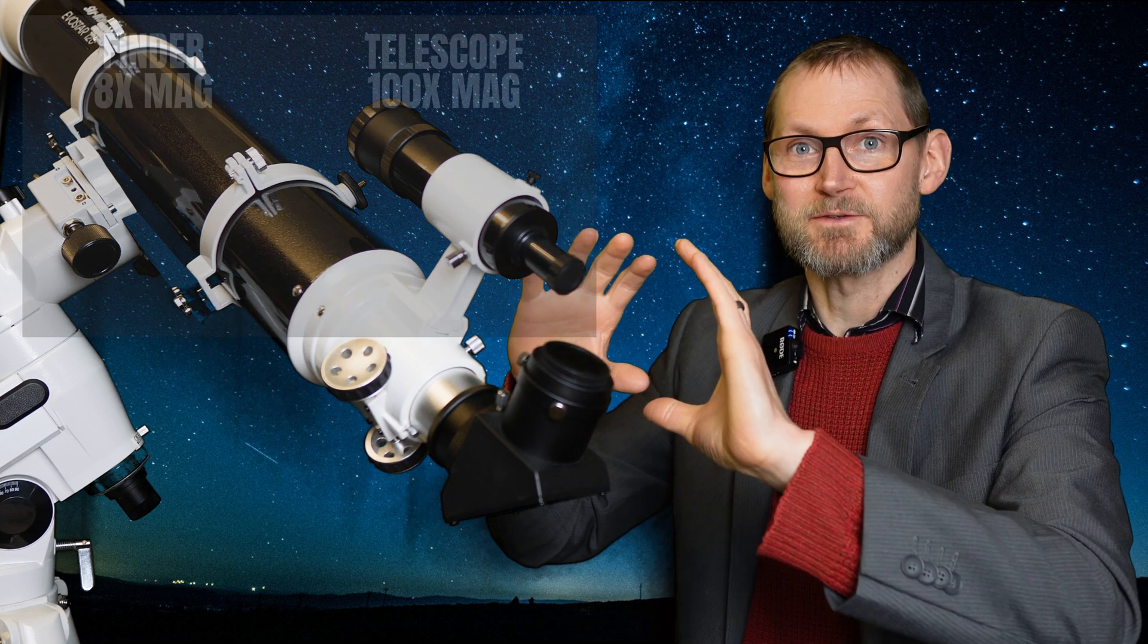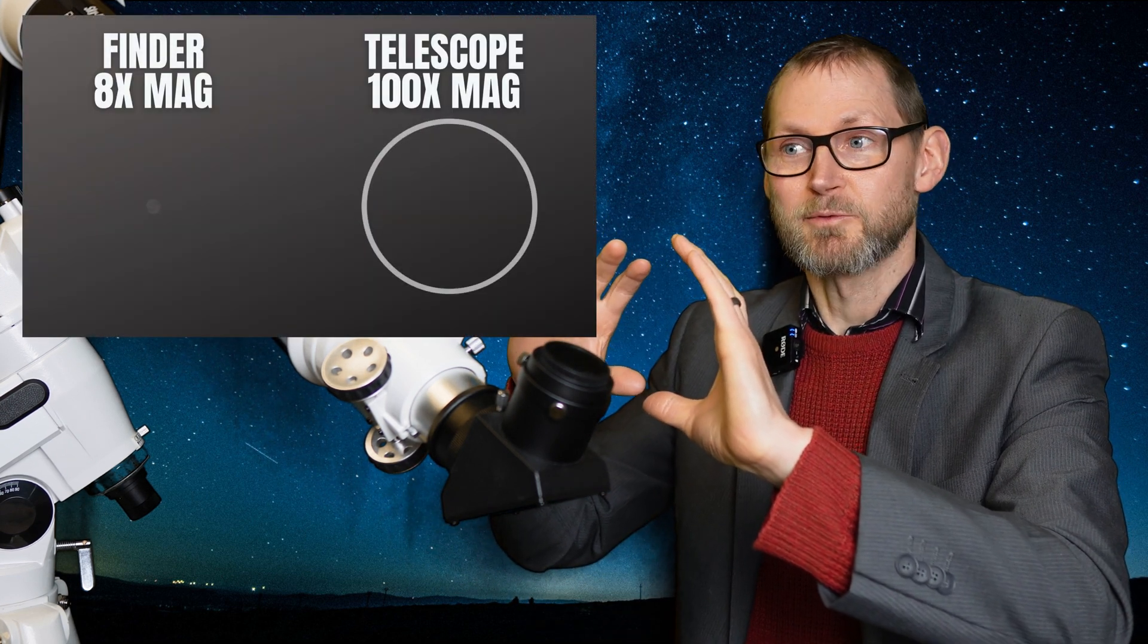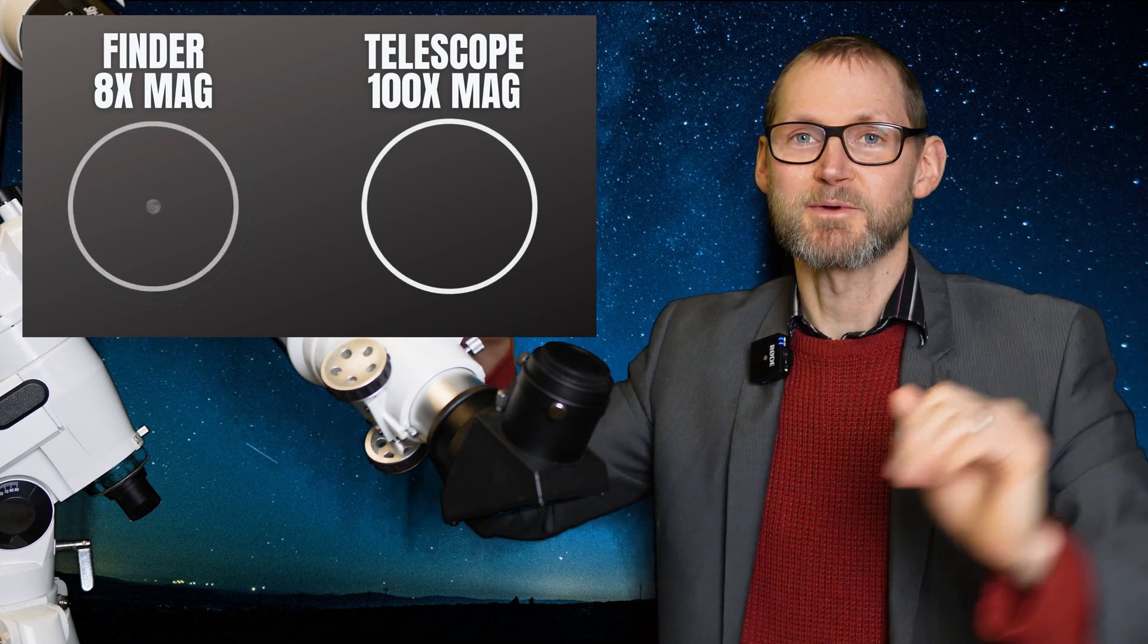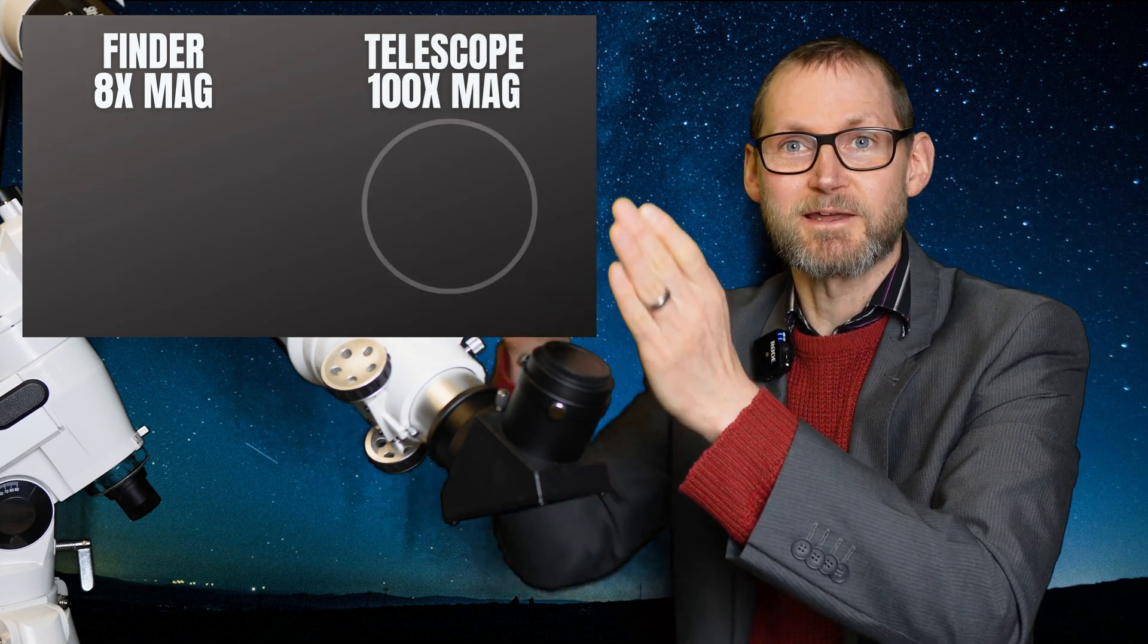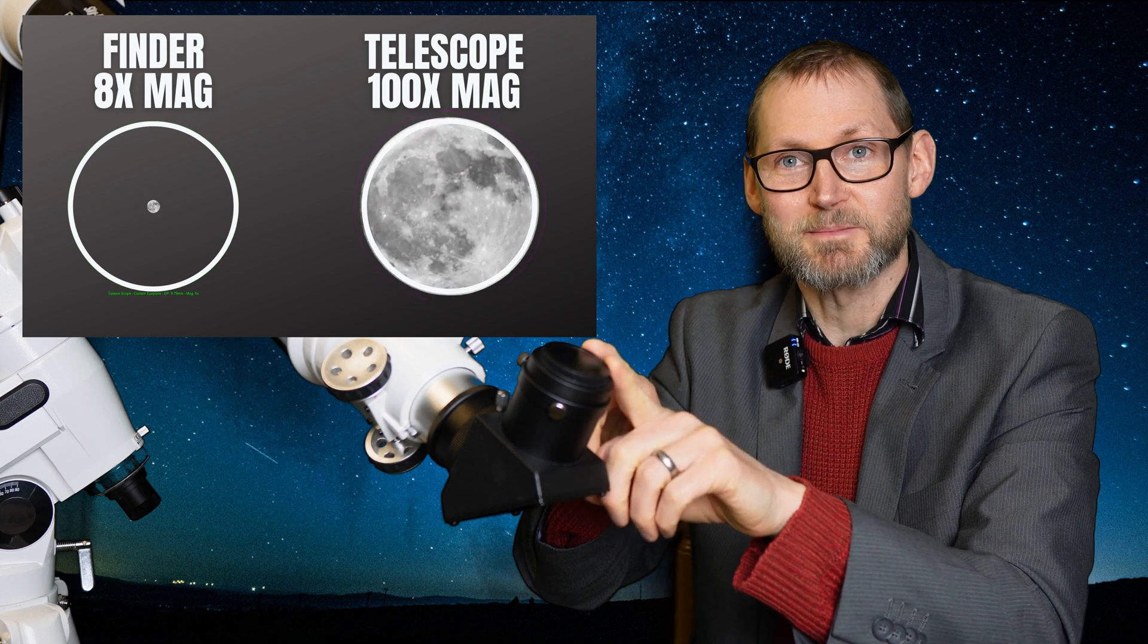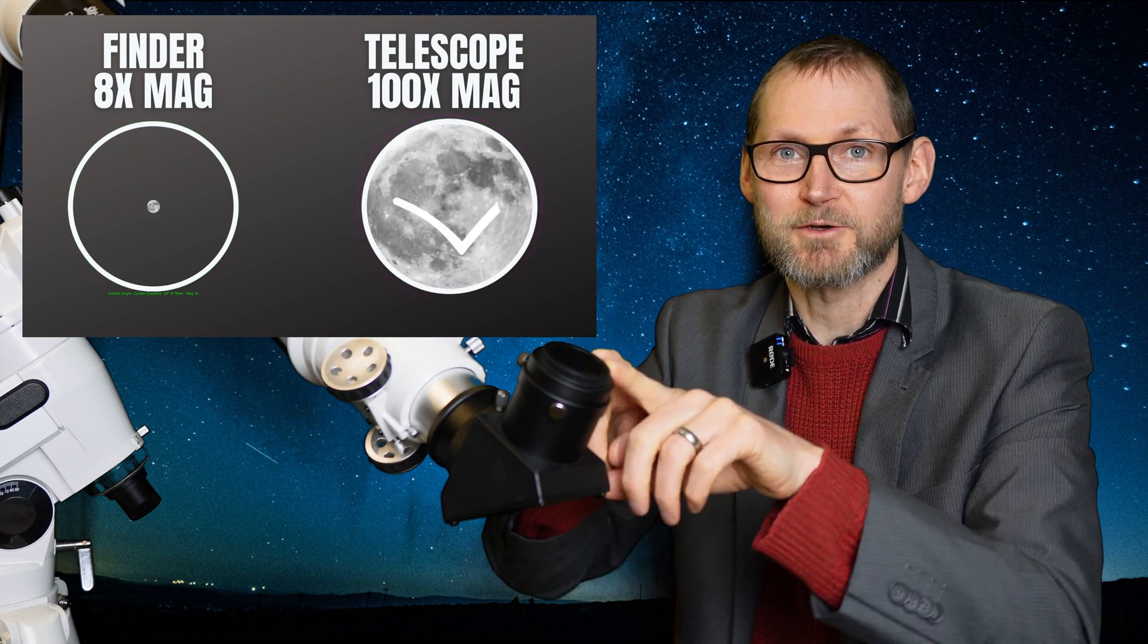So what might be outside the field of view in your main telescope will lie inside the field of view with your smaller finder scope, and therefore you can centre it and then look into your main telescope to get a higher power view of that object.